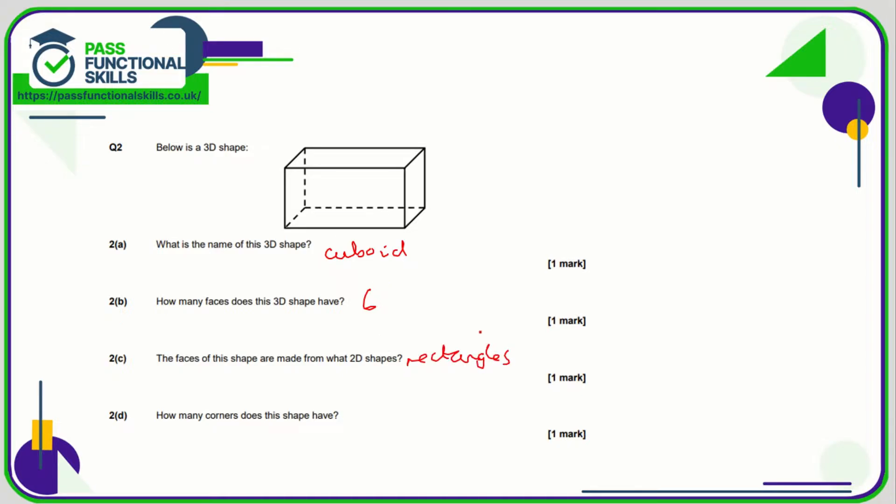Maybe not all of them are made from rectangles, but it certainly will have some rectangles, unlike a cube which is only squares. And the number of corners is exactly the same as a cube, so one, two, three, four, five, six, seven, eight.